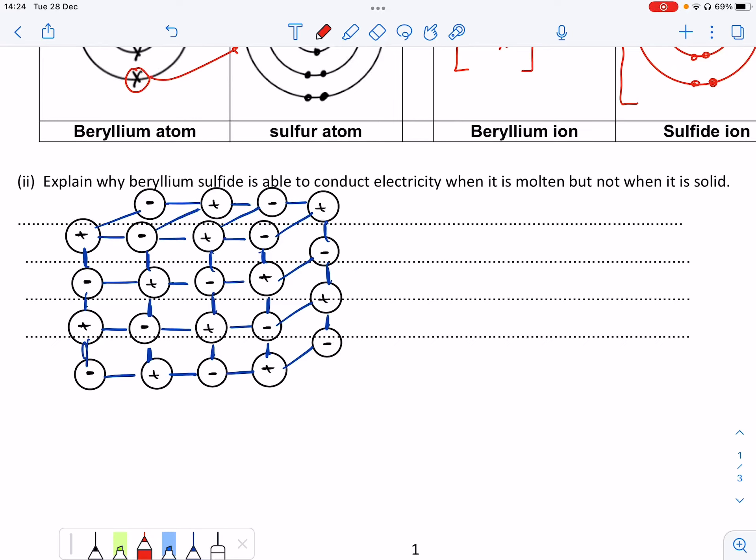Okay, this question wants us to talk about why beryllium sulfide as an ionic compound is able to conduct electricity when it's molten but not when it's solid. So this diagram that I've drawn to help explain this,